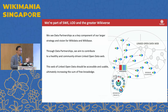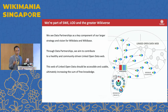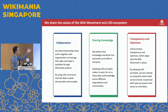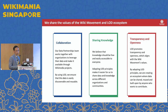The web of linked open data should really be accessible and usable. Ultimately, our biggest goal is to increase the sum of free human knowledge for everyone. There are several ways to achieve this vision — three main ways: collaboration, sharing knowledge, transparency, and openness. Our data partnerships team works together with different organizations to leverage on the data and make it available through the Wikimedia projects. By using linked open data, we ensure that this data is easily discoverable and reusable.